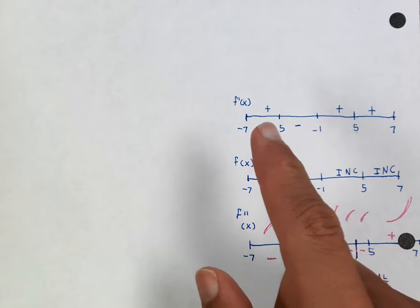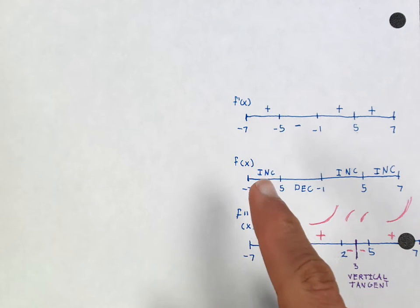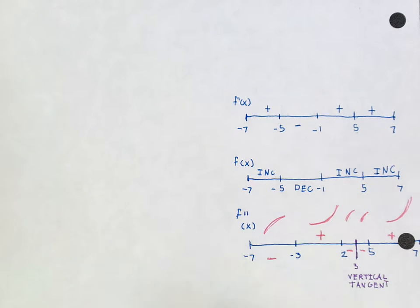I still have the sign analysis of the derivative. This is the sign analysis, if you will, of function f, and this is the second derivative. So this is the sign analysis. Now what I put here is basically a way to help me understand what I'm trying to do as I'm doing it.